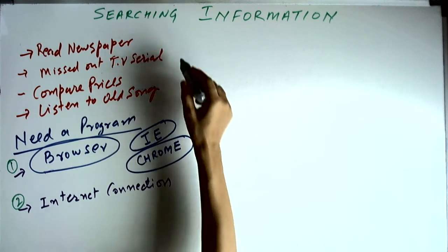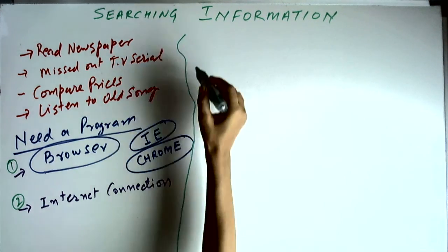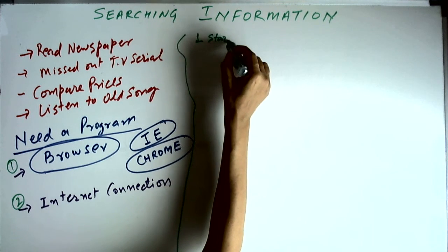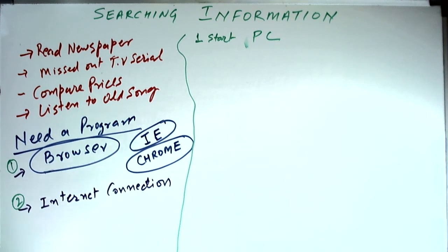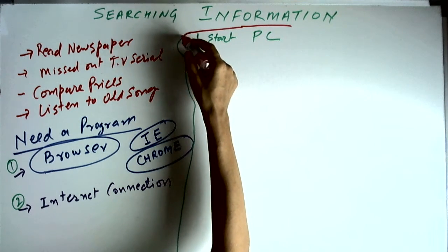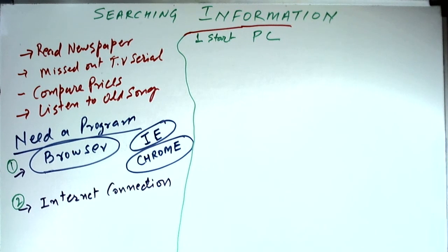The first step is to start your PC. I am calling it PC in short because PC stands for personal computer. Originally computers belonged only to companies and were very big. Now these computers are available for personal use, which is why it is called a personal computer. So the first step is start the computer — switch on the power, then press the start button.